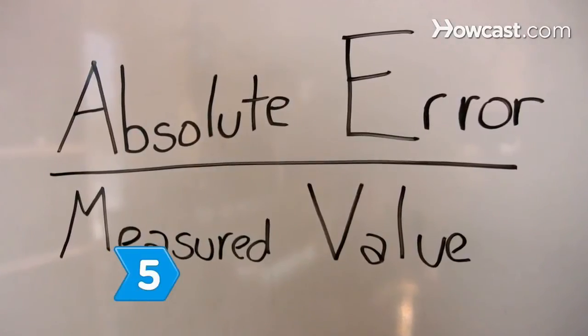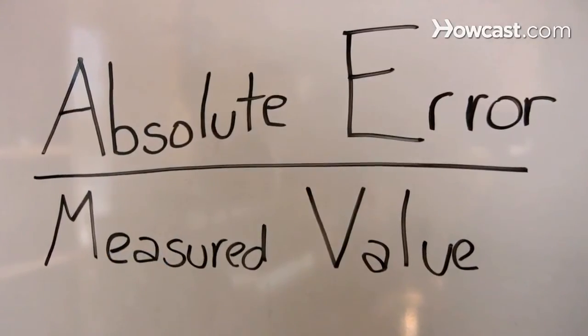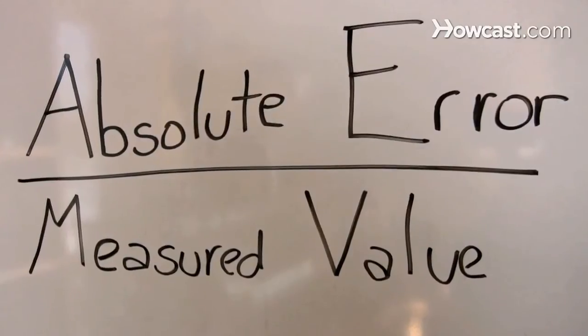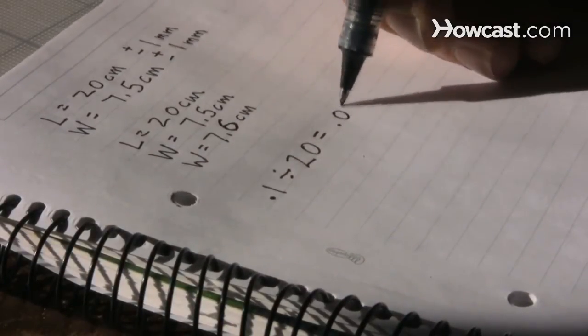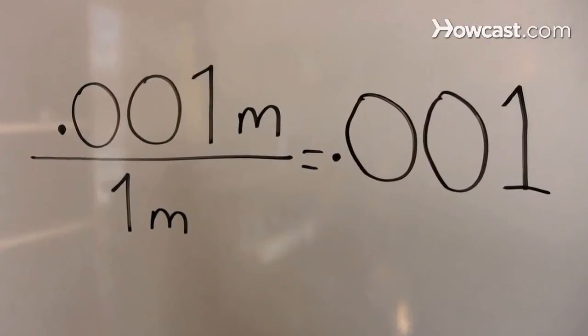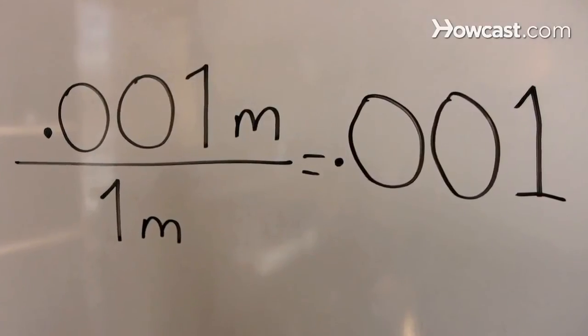Step 5: Calculate the relative error by dividing the absolute error by the measured value of an object. In the example given, the relative error is 0.001 meter divided by 1 meter, or 0.001. It's that easy.